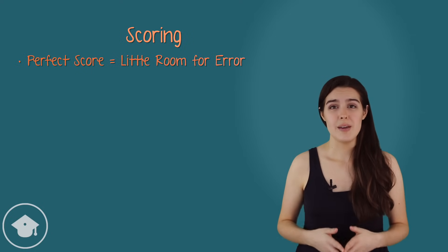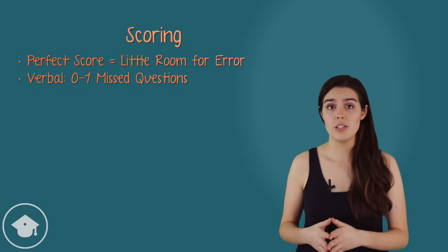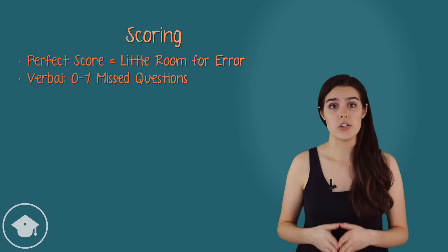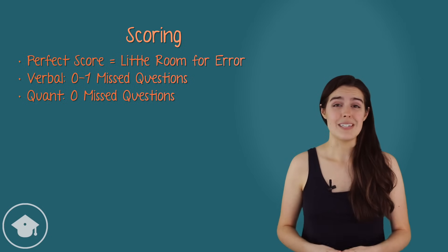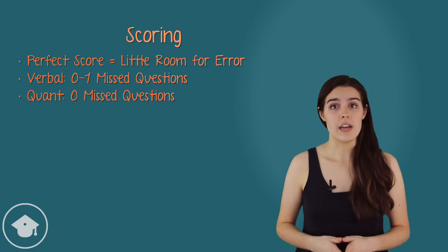For verbal, you may be able to miss a single question across the two sections and still get a perfect score. Quant is even less forgiving. It doesn't appear that you can miss any questions and still get a perfect score.